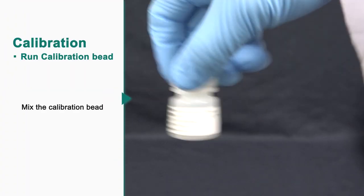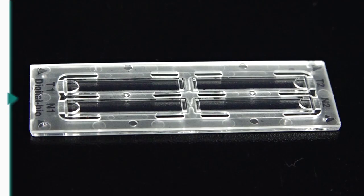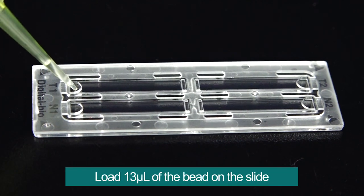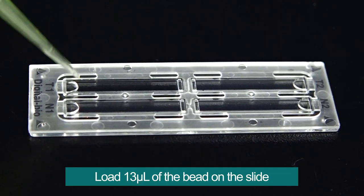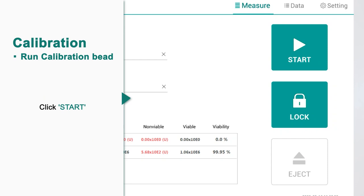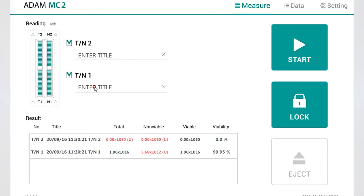For the test, mix the calibration bead and then load 13μL of the bead onto the slide. Next, insert the slide into Adam MC2 and click the start button.